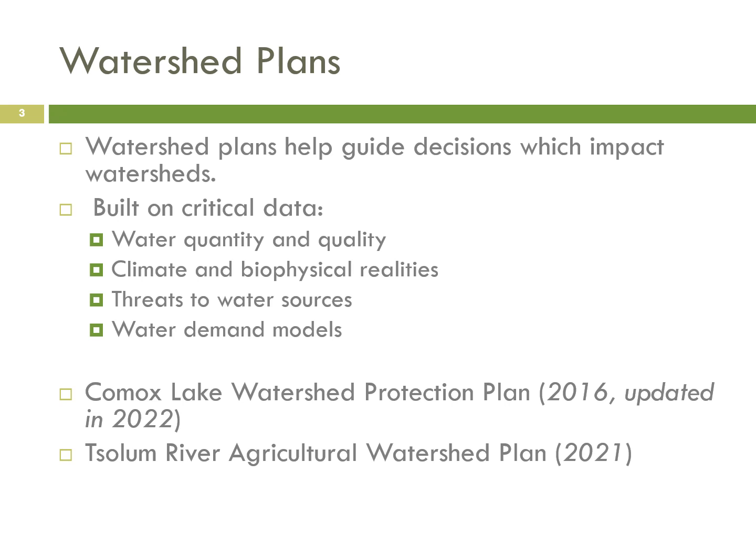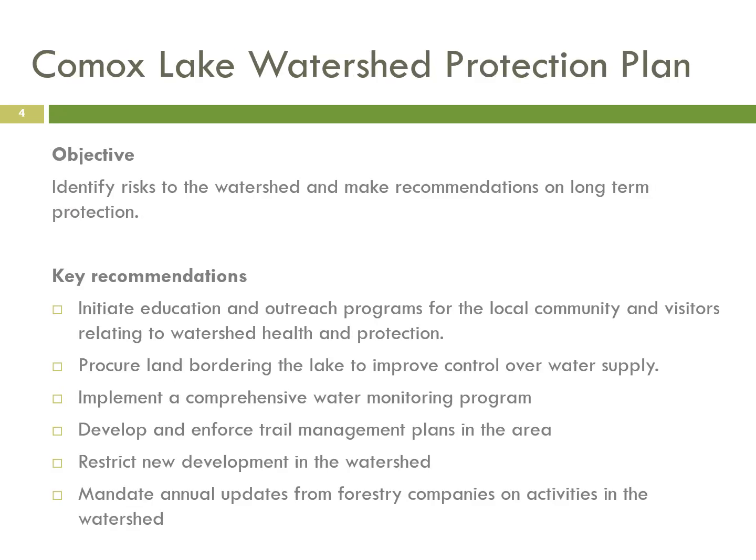The first is the Comox Lake Watershed Protection Plan, and the second, which has particular relevance to the agricultural community, is the Solem River Agricultural Watershed Plan. Regarding the Comox Lake Watershed Protection Plan, the objective was to identify risks to the watershed and make recommendations on long-term protection. Six key recommendations arose: to initiate education and outreach programs for the local community and visitors relating to watershed health and protection; to procure land bordering the lake to improve control over water supply; to implement a comprehensive water monitoring program; to develop and enforce trail management plans; to restrict new development in the watershed; and to mandate annual updates from forestry companies on activities in the watershed. Forestry use of many watersheds within the region is of concern to the agricultural community, so it is heartening to see this recommendation in the plan.